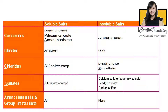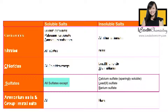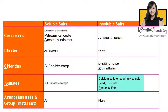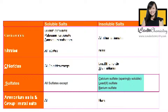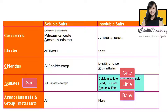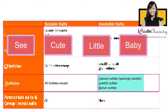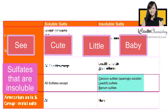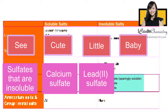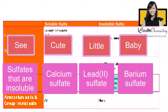Lastly, we'll focus on sulfate salts. All sulfate salts are soluble in aqueous solution except calcium sulfate, lead 2 sulfate, and barium sulfate. An easy way to remember is 'CCLB': S stands for sulfates, and the insoluble sulfate salts are calcium sulfate, lead 2 sulfate, and barium sulfate.